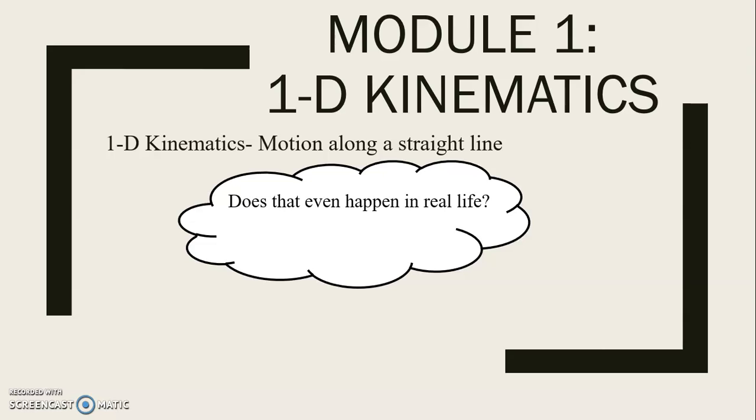So 1D kinematics is simply motion along a straight line. And while I should back up, kinematics is the study of motion without worrying about what the causes of that motion are. We'll get to that later in chapter four.